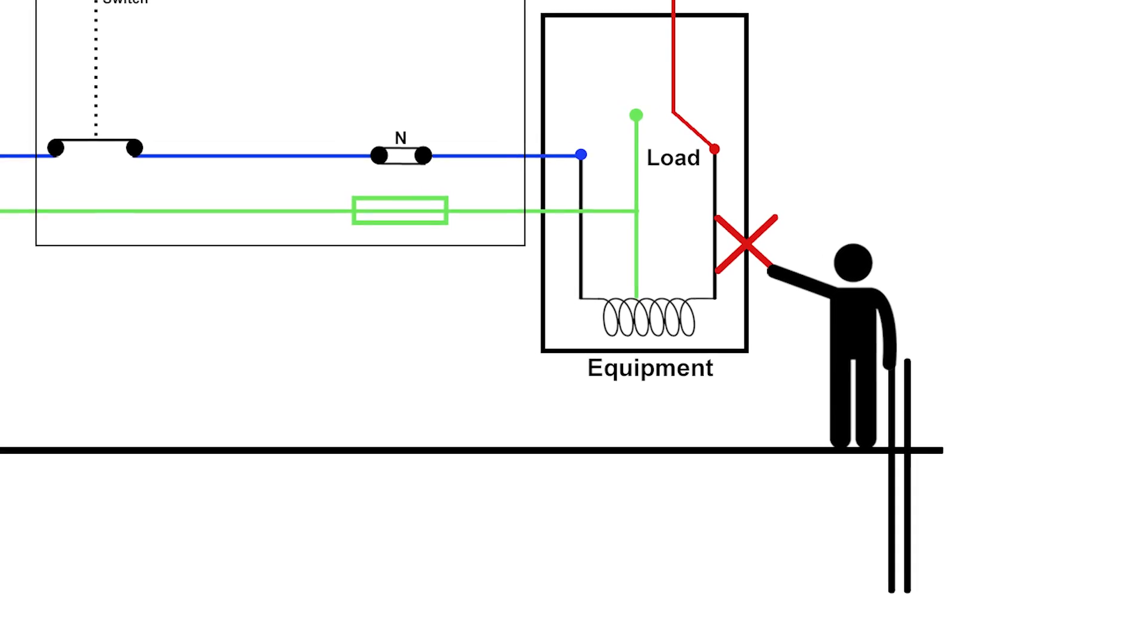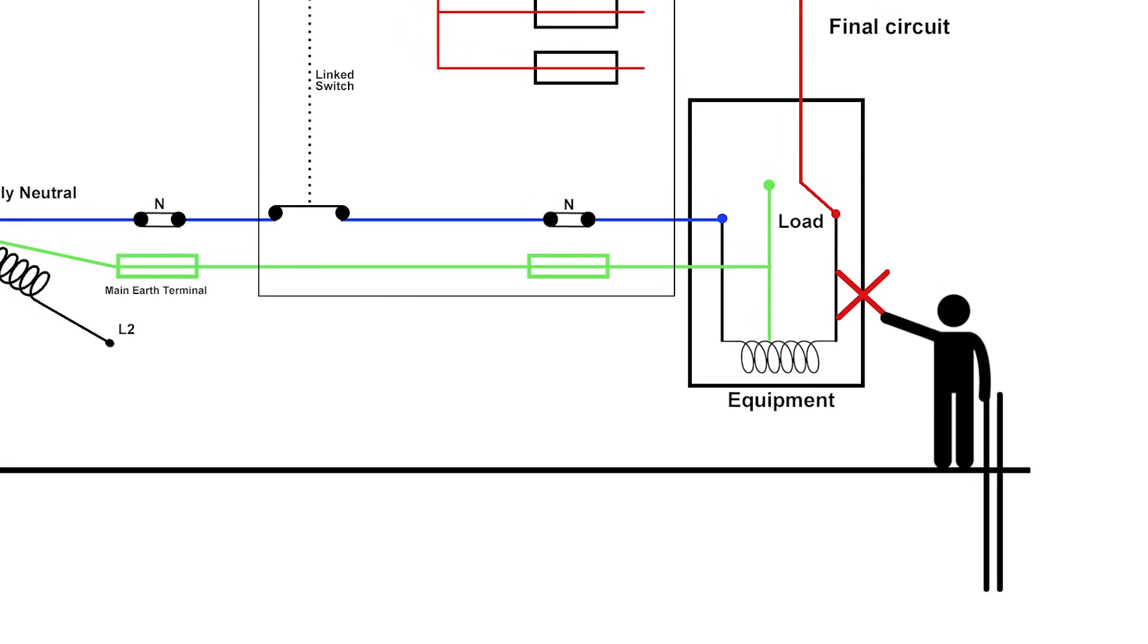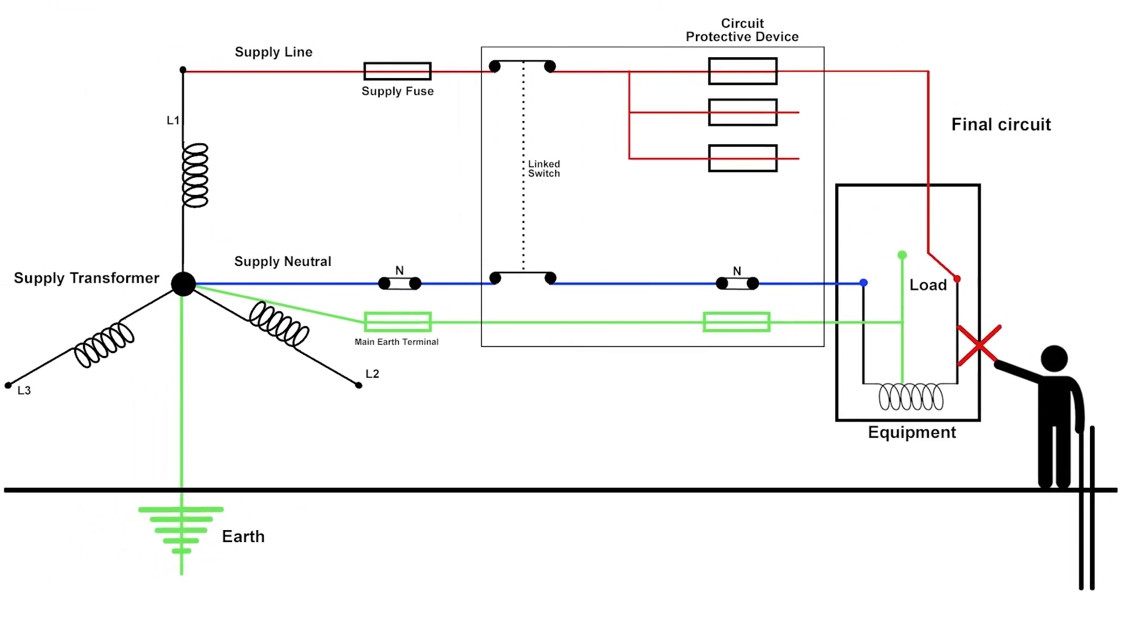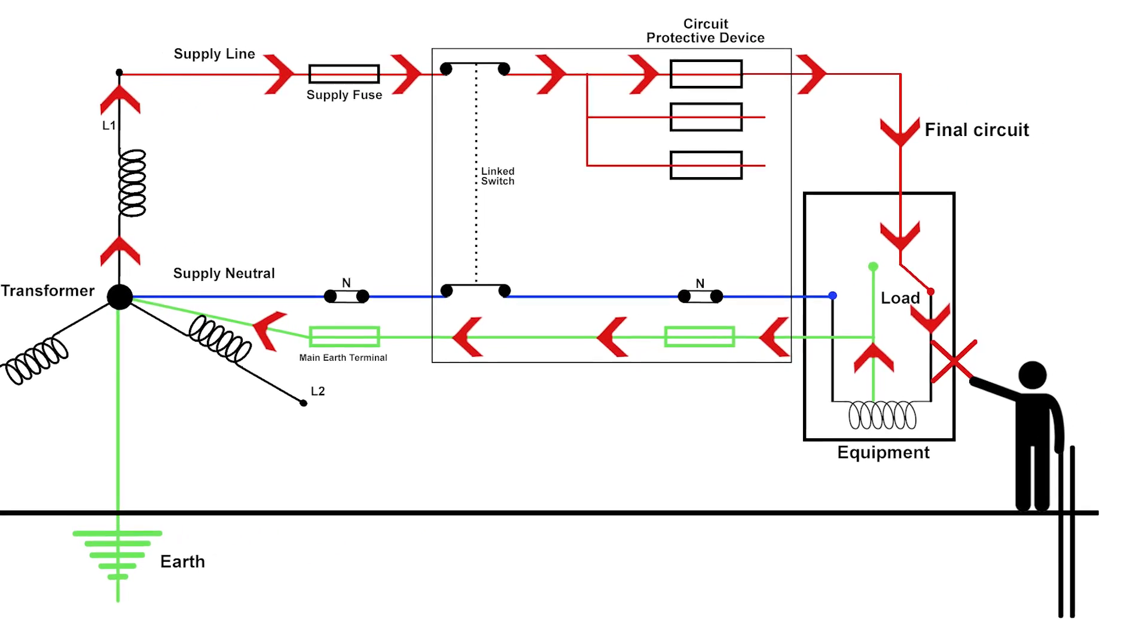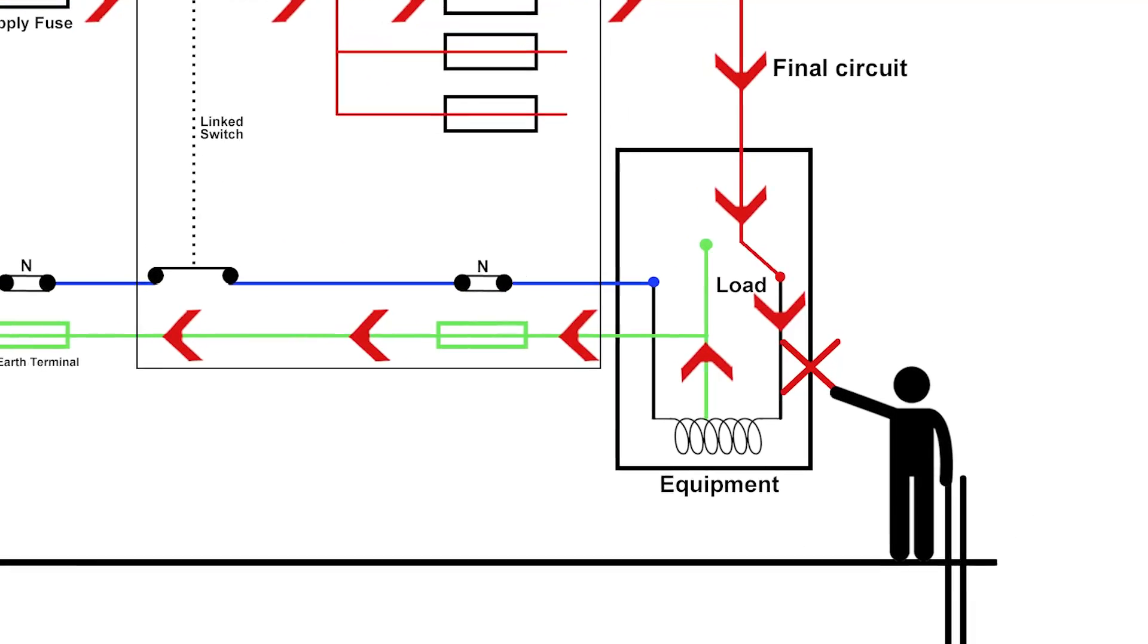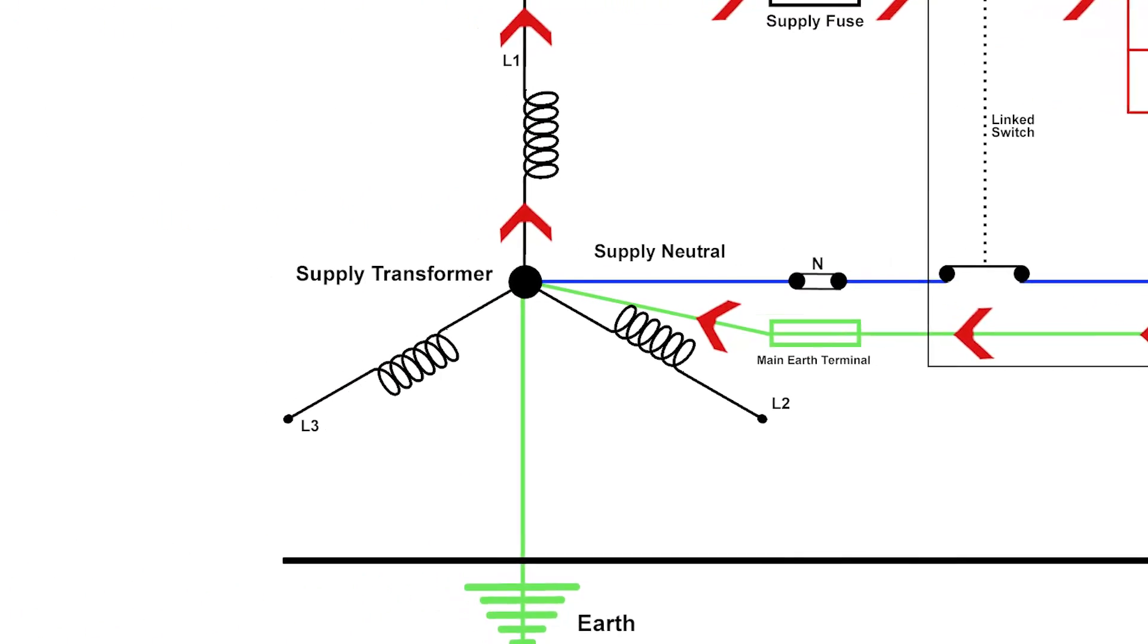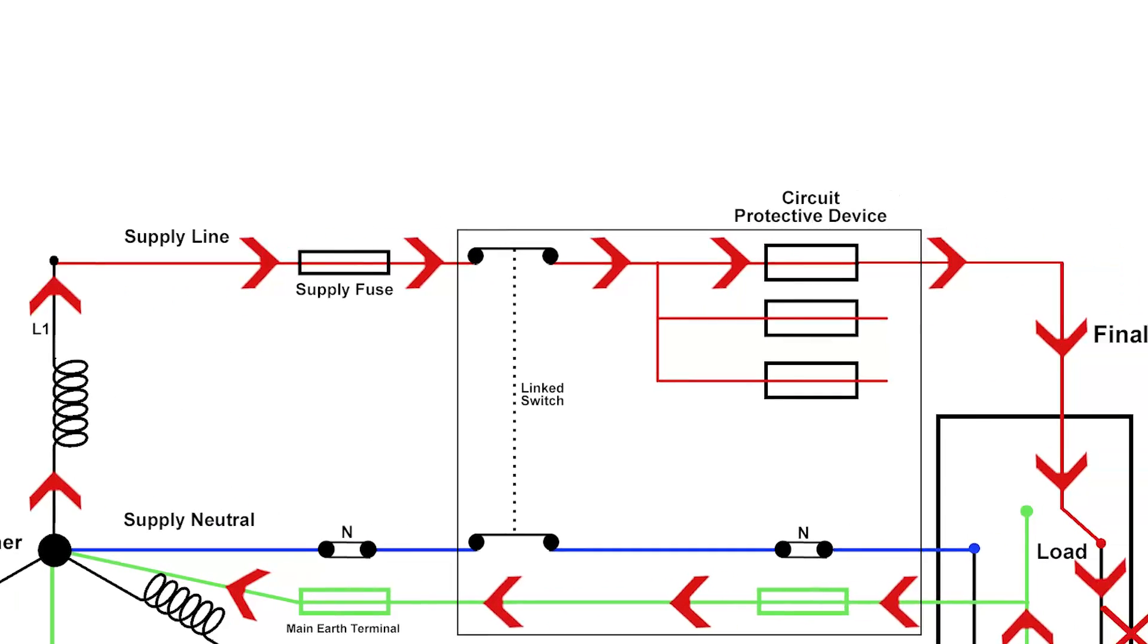It's important that my earthing system has a low enough resistance so that enough current can flow to operate this protective device. You can see that in the event of a fault, the current's going to flow through the case of the machine to wherever our earth is connected, then through our earthing system back to the star point of the transformer, and it forms what we call an earth fault loop.